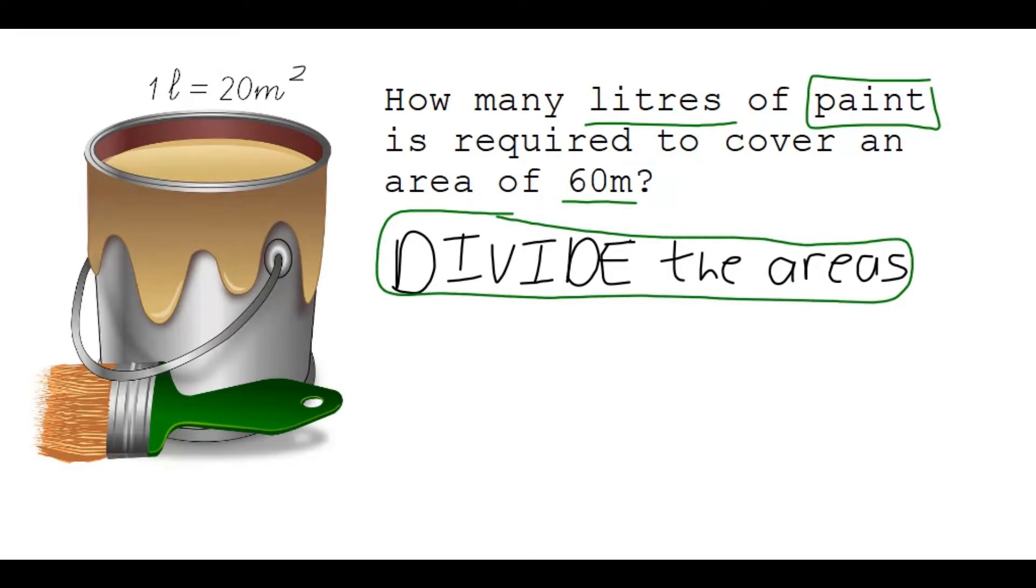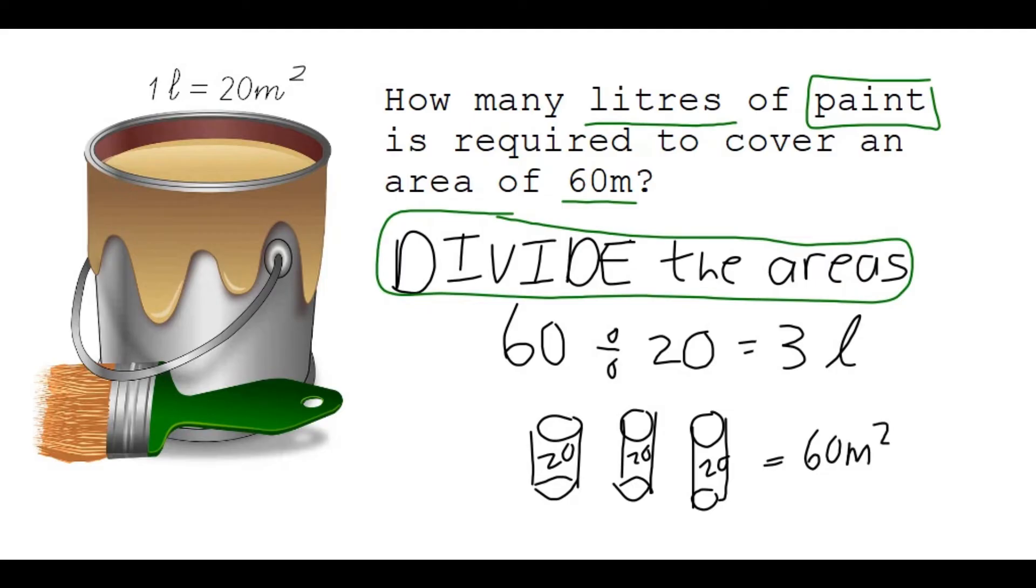So we're going to say if I have 60 square meters, I'm going to divide that by the 20 square meters, because I want to see how many times this 20 go into 60. So I'll get an answer of 3 liters. Think about it like this: there's one paint can, this one covers 20 square meters, then I have another one, it covers 20 square meters, and another one, it covers 20 square meters. So at the end of the day, you have three cans and they cover 60 square meters.